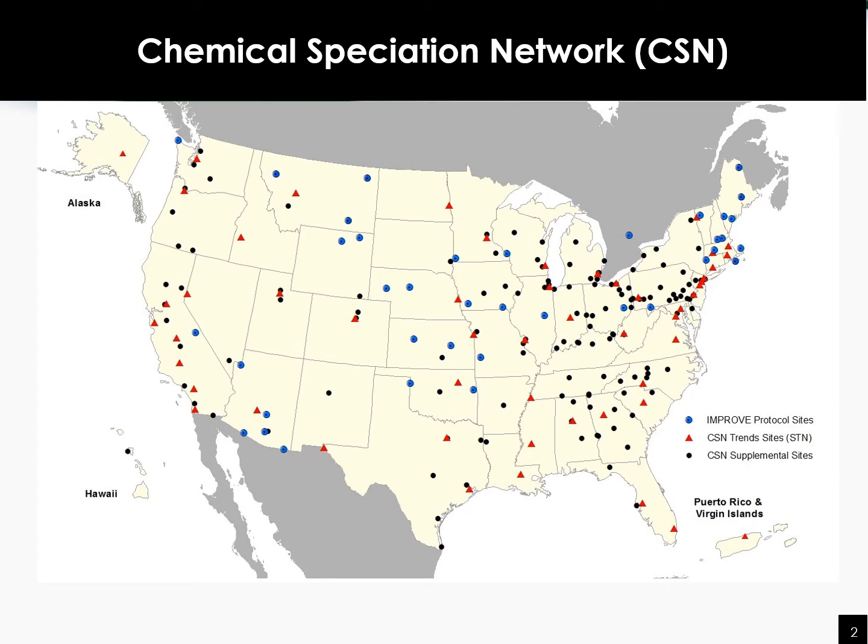EPA, along with its state, local, and tribal air quality agency partners, manage a large network of air quality monitors across the nation to measure pollution. The goal is to identify and fix air quality problems to help ensure that all Americans have clean air to breathe.